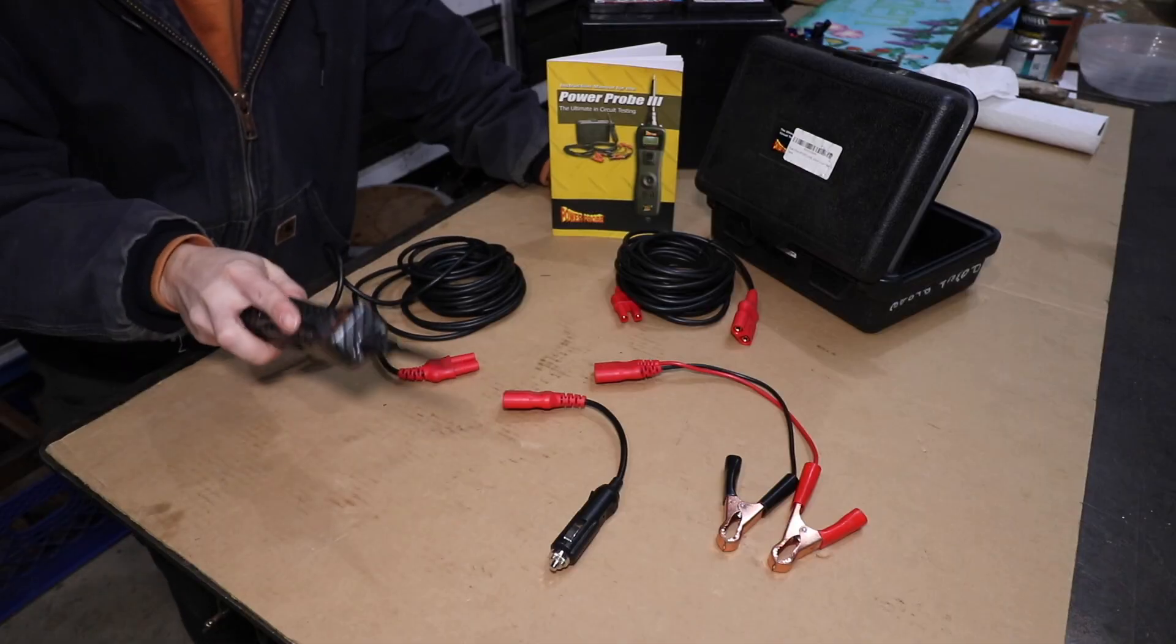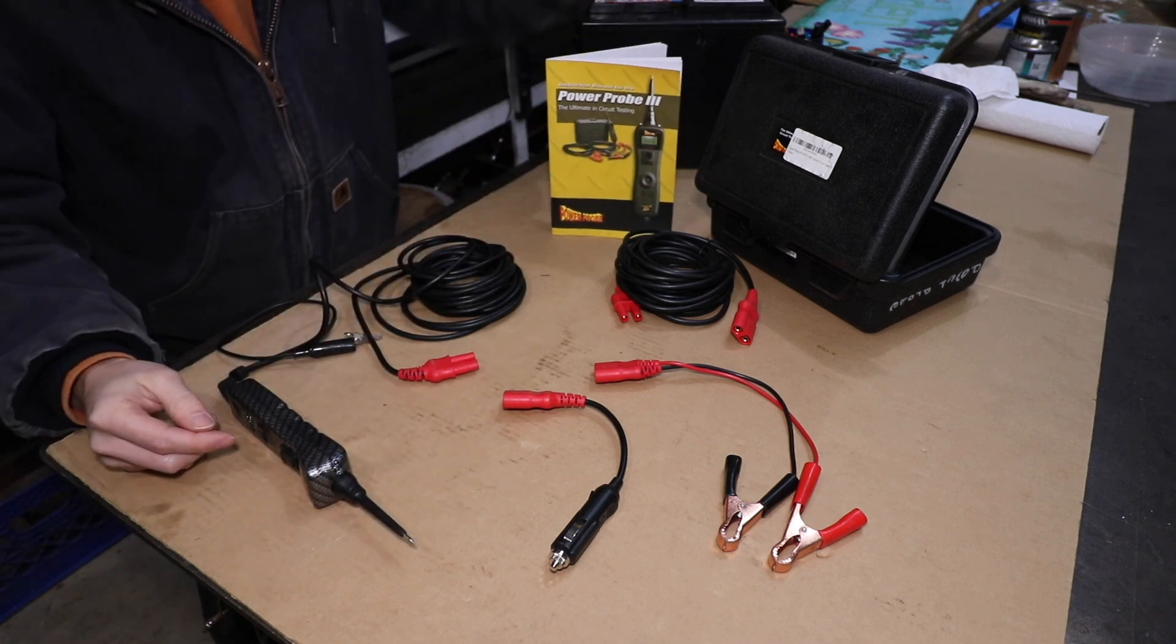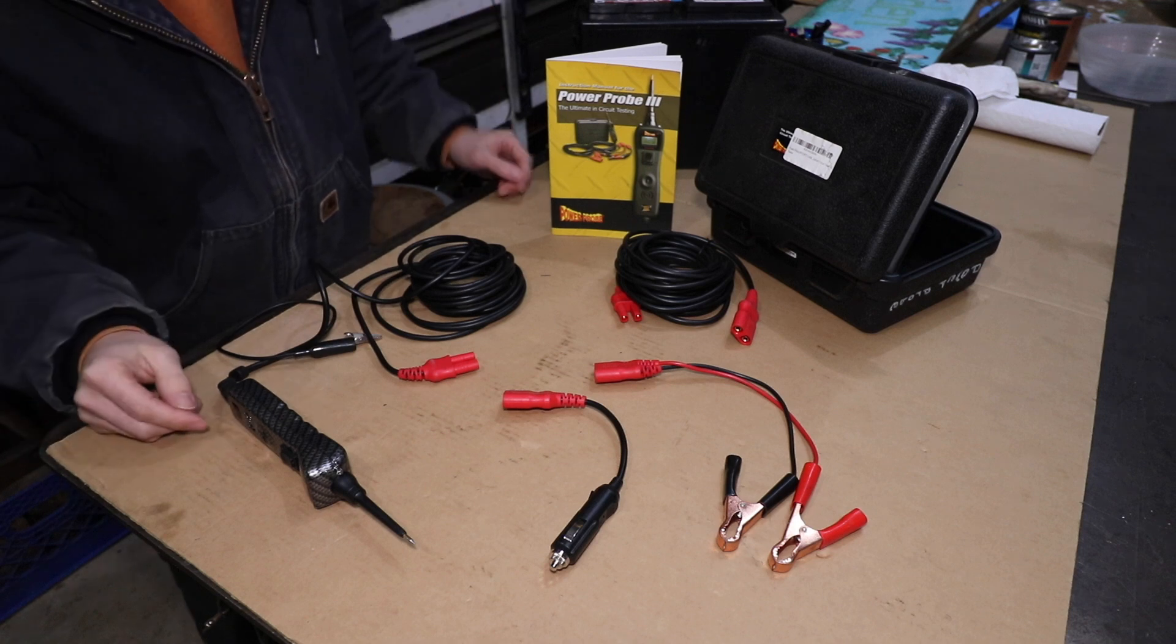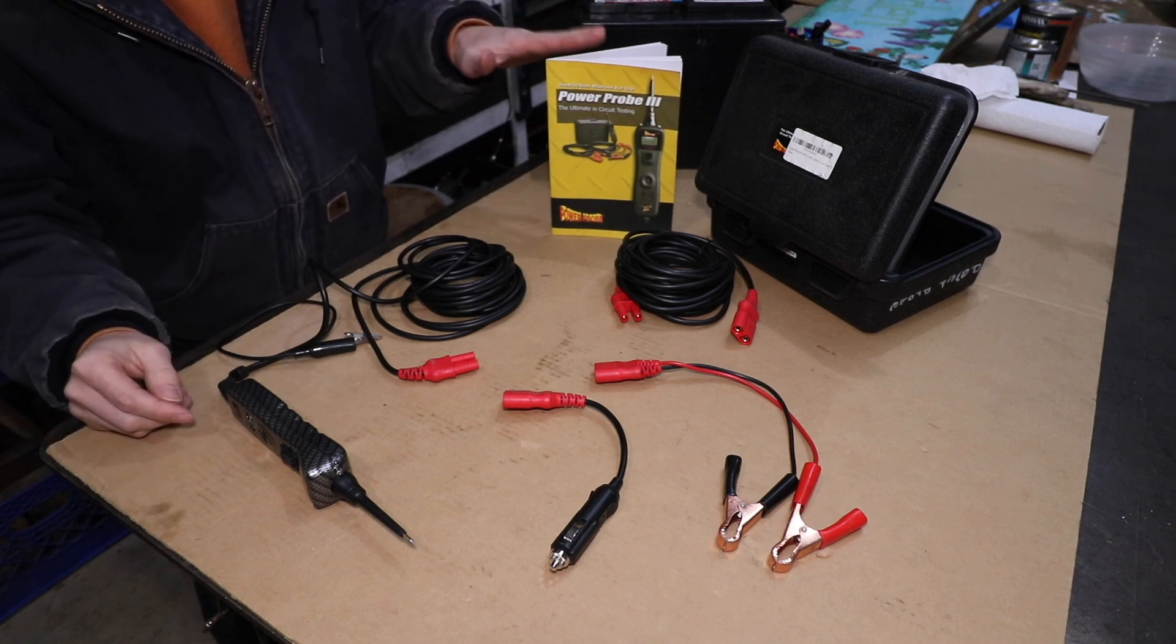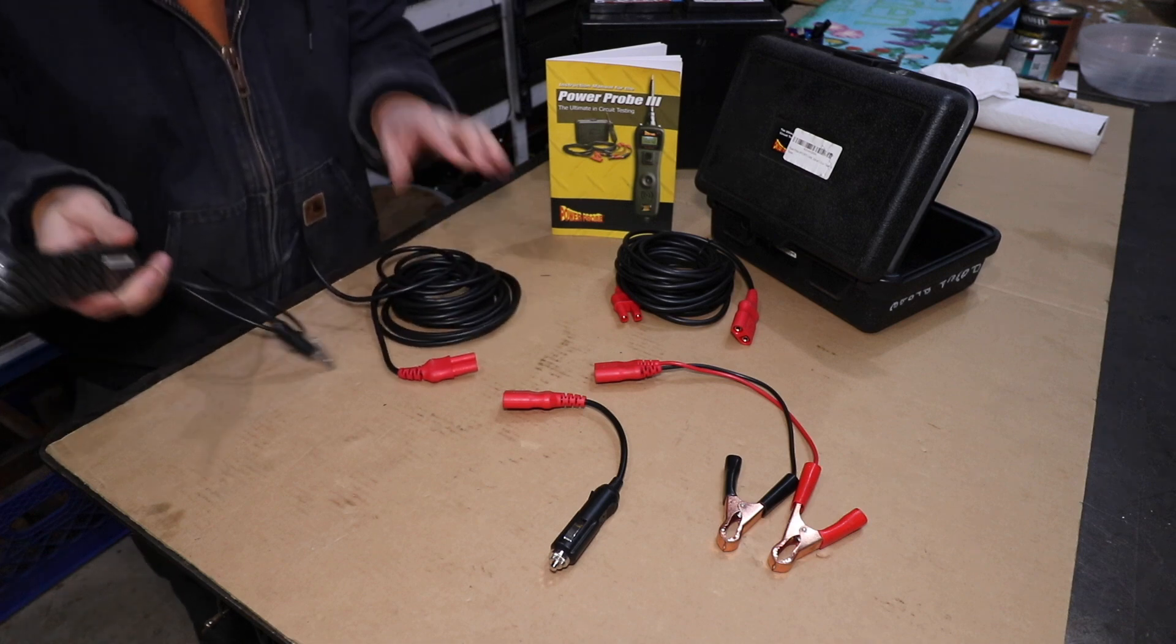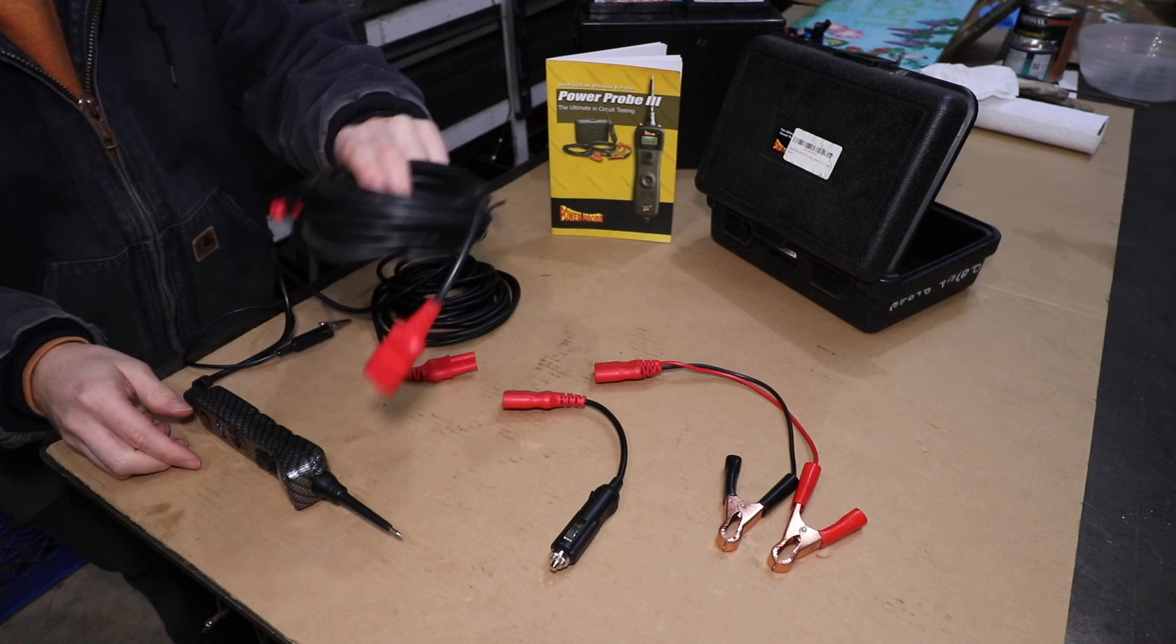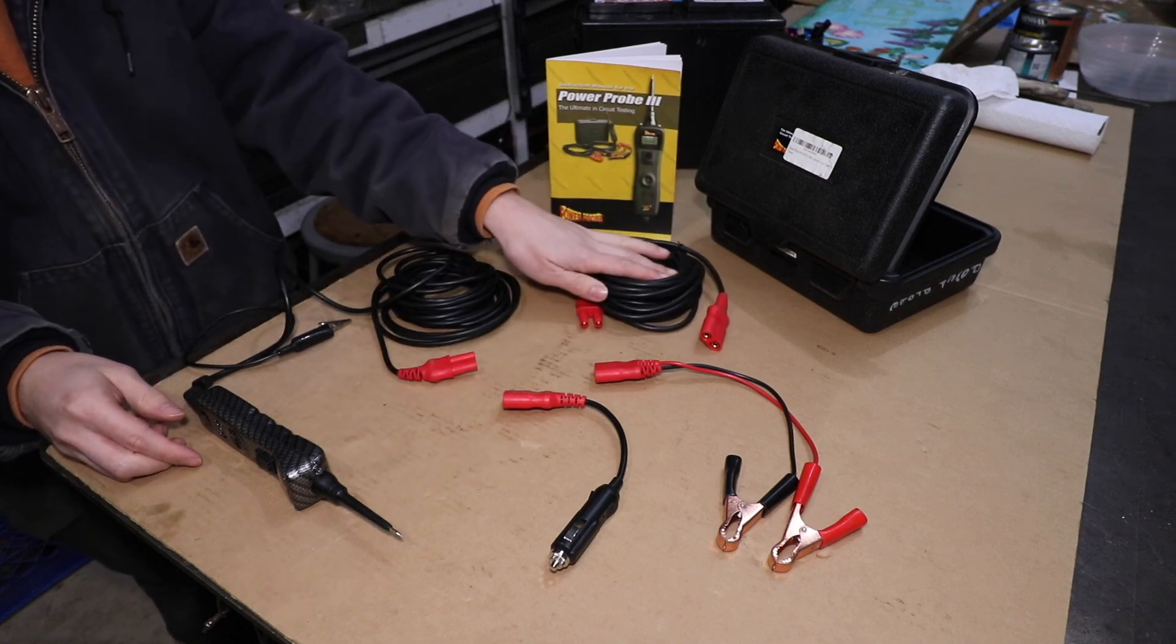Now, before we power up this Power Probe 3, let's quickly go over what's included in the kit. So you get this nice hard carrying case. This is where I normally store everything. A simple instruction manual. You get the Power Probe itself hardwired onto that Power Probe is about 20 feet of cable. You also get a 20-foot extension cable, which is really nice when you're dealing with trailer wiring issues.